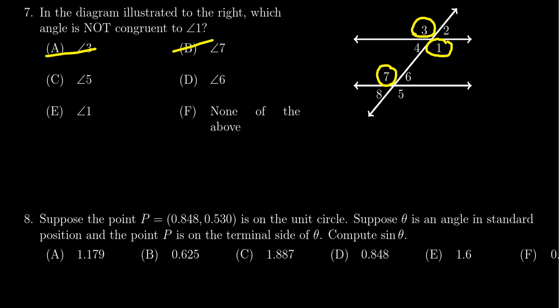We also get 5 is congruent to 7 because they're vertical angles, and so by transitivity, 1 and 5 are congruent to each other. They're corresponding angles.